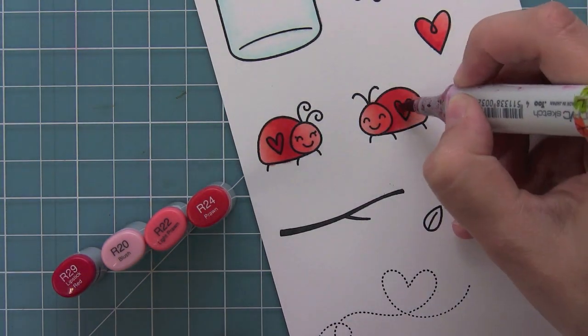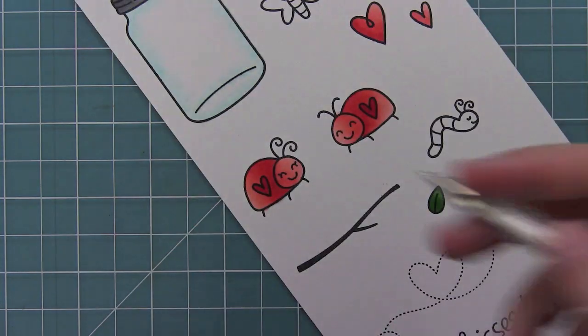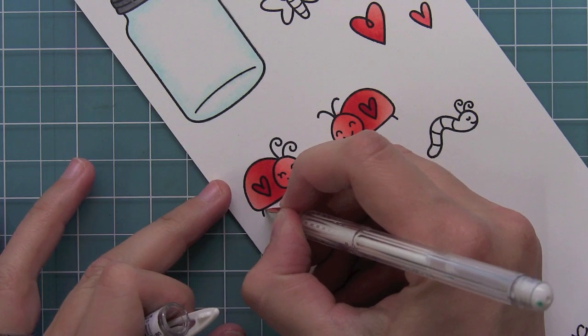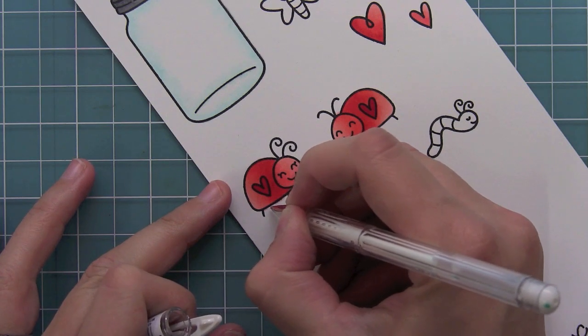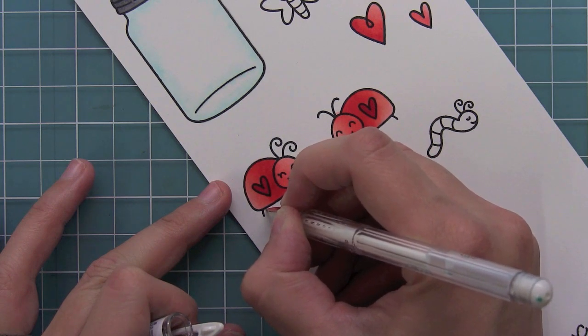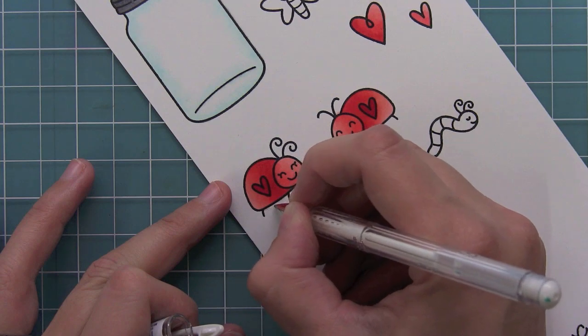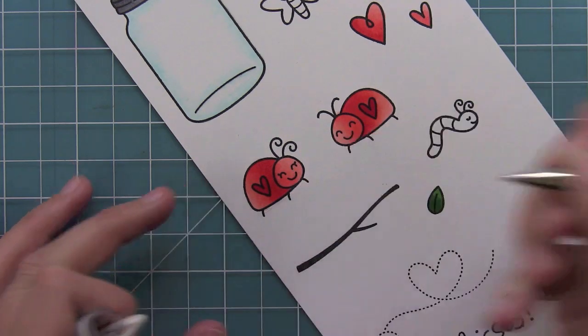And here I colored the other bug in the same exact way. Now on the bottom there you can see that some of that red marker bled out a little bit. It happens sometimes with reds and purples. And so I'm just taking my white gel pen and going over that line. And as soon as that gel pen dries you won't even be able to tell that that happened. I love doing this because I always kind of color outside the lines by mistake.